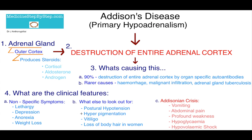There may also be hyperpigmentation. This is caused by excess ACTH in the body. Excess ACTH stimulates melanocyte action. The reason for the excess ACTH is because you no longer have cortisol, and cortisol normally suppresses the production of ACTH. So without cortisol, you have more ACTH being produced. The hyperpigmentation is primarily at pressure points, skin creases, recent scars, and at the buccal mucosa.